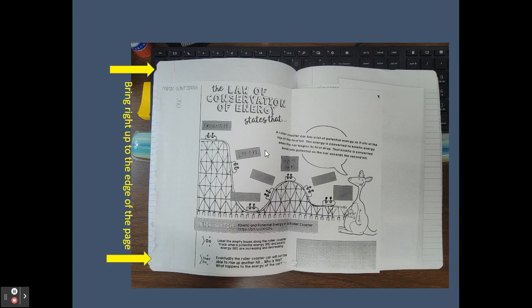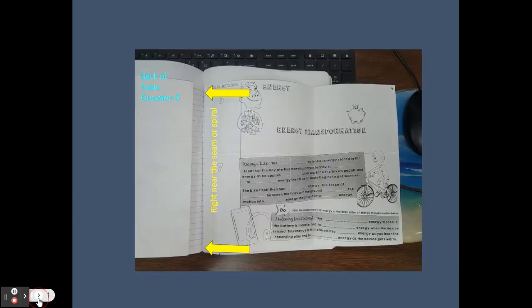Now, topic question five—notice it's got these little boxes in it. You're going to have to fill in and go through the activities here. And our last page, topic questions six and seven, that's going to go right across from question five. Question five we fold it to close it, and write again right near the seam of the spiral or the seam of your journal.